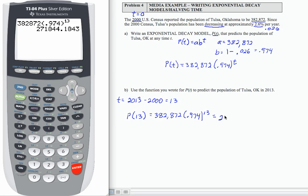So that's going to be 271,844. Let's write that as a complete sentence: in 2013 Tulsa had 271,844 people.